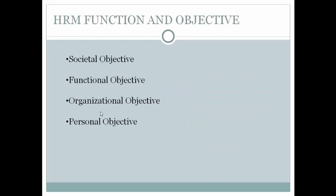Human Resource Management functions and objectives — there are four types of objectives. The main objective of HRM is to ensure the availability of willing and competent workforce to an organization. Based on that, there are other objectives: societal objectives, functional objectives, organizational objectives, and personal objectives. Societal objectives of HRM make sure the organization is socially and ethically responsible, minimizing the negative impact of societal demands on the organization. For example, EOE laws force organizations to be ethical in retrenchment, to minimize discrimination in hiring based on ethnicity, race, and religion.